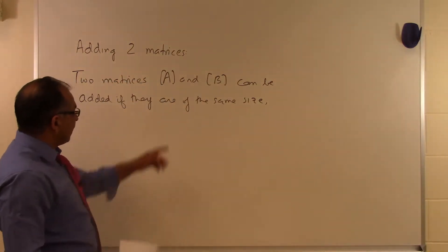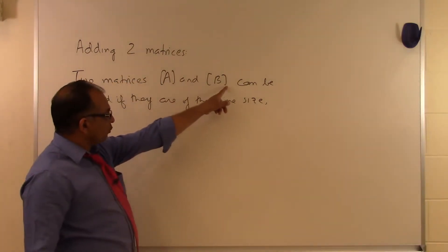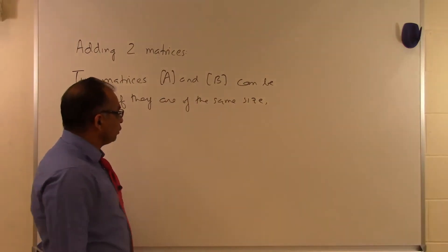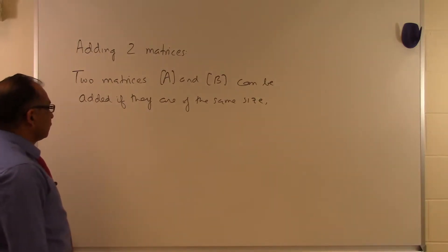The number of rows of A has to be the same as the number of rows of B. The number of columns in A has to be the same as the number of columns of B. Only then can two matrices be added.